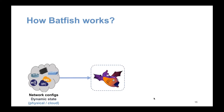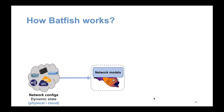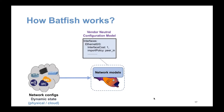To get started with Batfish, all you have to do is feed it the configuration of all your network devices. We support all popular network vendors — Cisco, Arista, Juniper, the cloud providers — and the list is growing. We build a set of models from those configurations: first, a vendor-neutral configuration model that normalizes vendor syntax into a common data model. Then we create a routing model with a full route simulation, building the RIBs and FIBs the network would generate from those configurations.